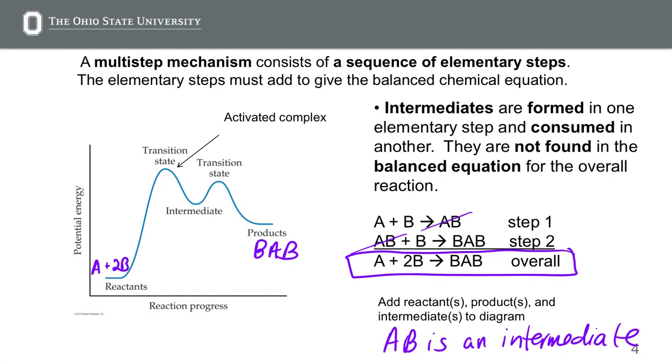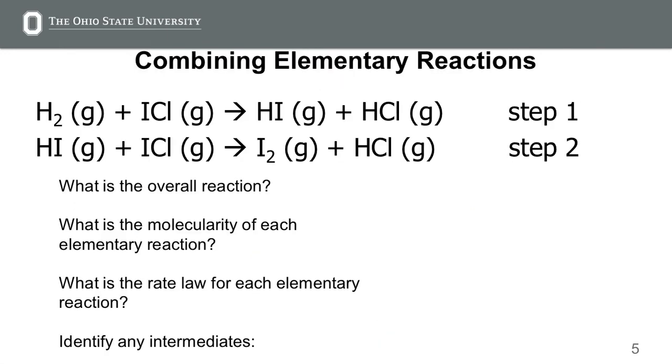And so we can add AB to our diagram in the valley where the intermediate is formed. Does that make sense?